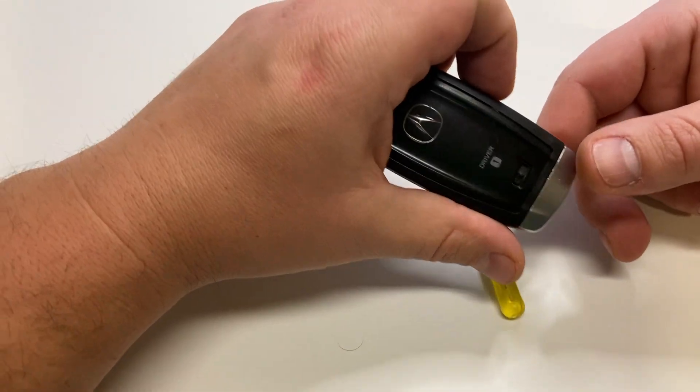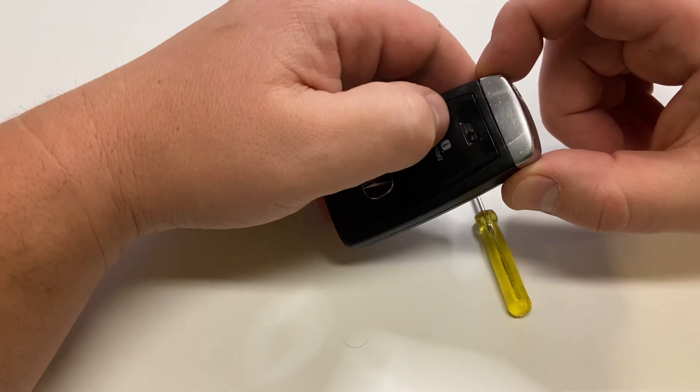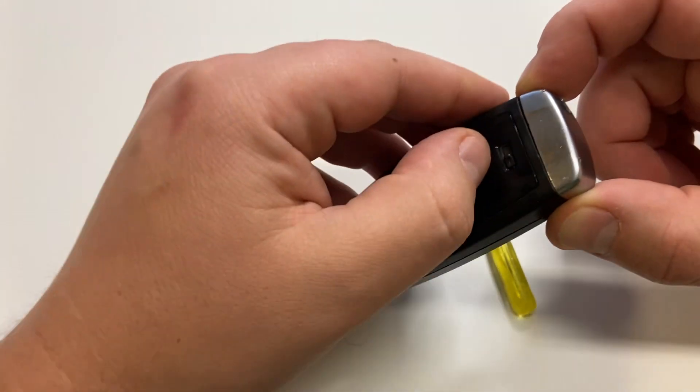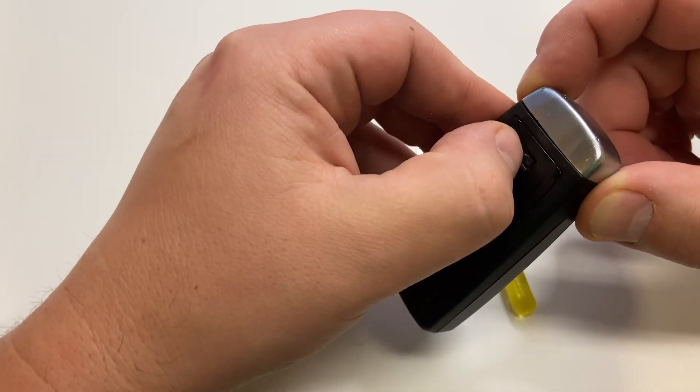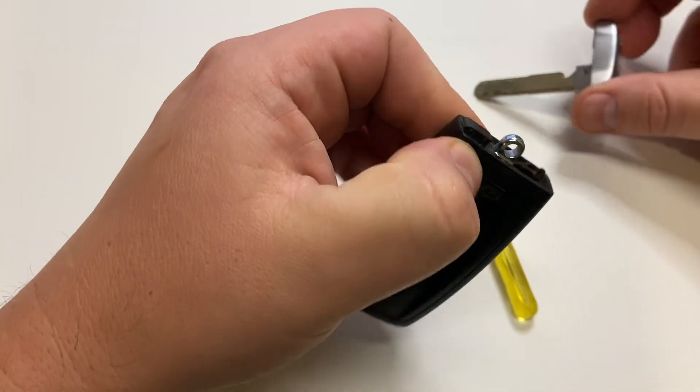The way you do it is flip the keyfob. You see the emergency key is right here. To remove the emergency key, you have a little button right here. Slide it on the side, hold it, and pull the emergency key out.